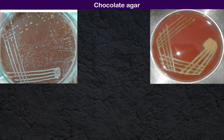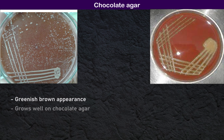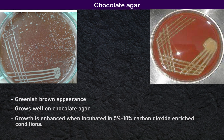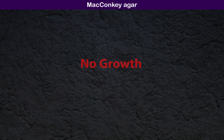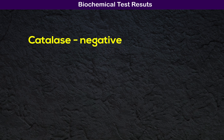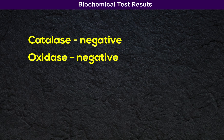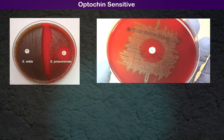On chocolate agar, S. pneumoniae shows a greenish-brown appearance and grows well. Growth is enhanced when incubated in 5 to 10 percent carbon dioxide-enriched conditions. There is no growth on MacConkey agar. S. pneumoniae is catalase-negative and oxidase-negative. Furthermore, S. pneumoniae is optochin-sensitive.